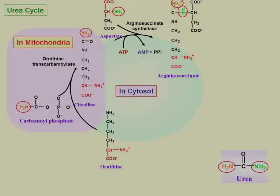Aspartate enters the cycle and it costs an ATP to form arginosucinate — a condensation of citrulline with aspartate catalyzed by arginosucinate synthetase. From the diagram you can see the amino group from citrulline and the amino group from aspartate connect, breaking the carbonyl bond and forming what is likely an amide bond. The key point is that aspartate connects to citrulline to form arginosucinate.